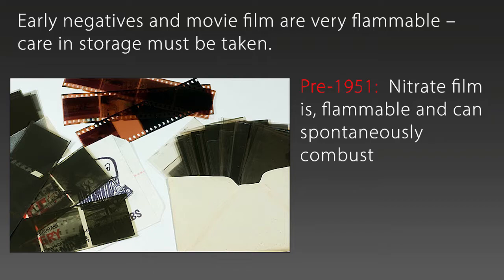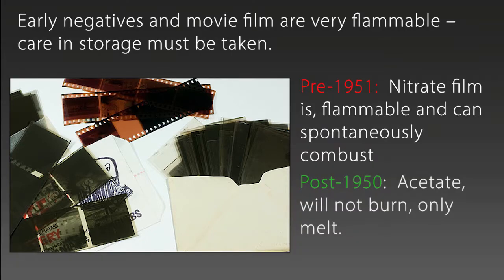Negatives and film up to 1950 were made of a material called cellulose nitrate. This chemical is highly flammable and was even used in wartime explosives. After many fires and disasters, the industry perfected an acetate version that would not burn.